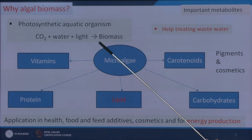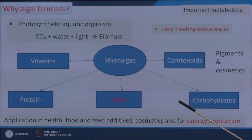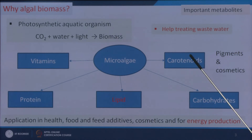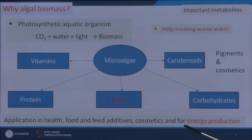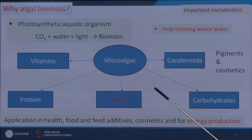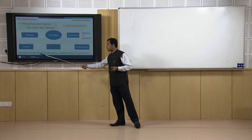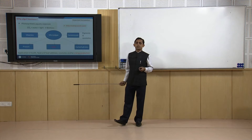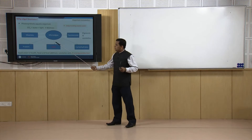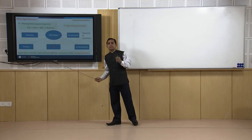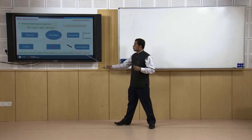During metabolism, algal biomass forms different types of metabolites such as vitamins, protein, lipid, carbohydrates, and carotenoids. Carotenoids are pigments used in cosmetics. Growing microalgal biomass allows us to separate these metabolites for various applications — food applications, healthcare sectors, feed additives, cosmetics, and energy production. We are interested here in energy production. The lipid content present in microalgae is responsible for upgradation to biodiesel. Algal bio-oil to biodiesel is basically the upgradation of the lipids present in it. Using other methods like thermal or biological routes, protein, carbohydrates, or vitamins can also be converted to energy.